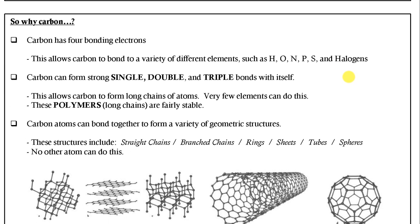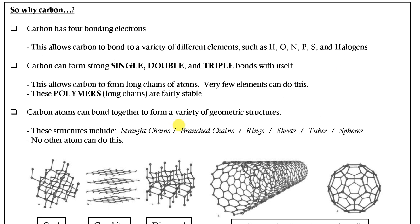So why carbon? Well, carbon has four bonding electrons and this allows it to bond to a variety of different elements such as hydrogen, oxygen, nitrogen, phosphorus, sulfur, and the halogens. Carbon can also form strong single, double, and triple bonds not only with these elements but also with itself. This allows carbon to form long carbon chains known as polymers, which tend to be very stable — and very few elements can actually do this.